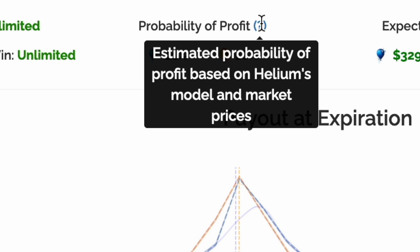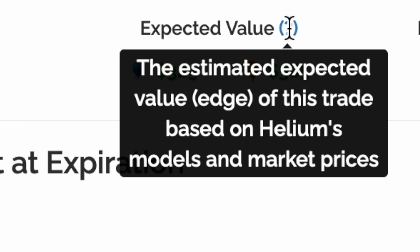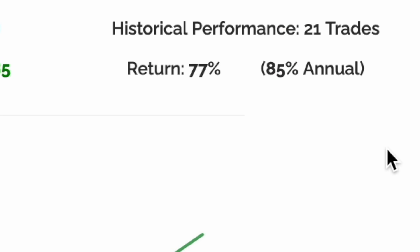Probability of profit is the estimated likelihood of success on this trade. Helium's AI models think this trade has a 21% chance of success, while the market thinks we have a 16% chance. Expected value is our theoretical edge on this trade, or the average of all potential future outcomes. Historically, this model has returned an average of 77% returns over 21 trades.